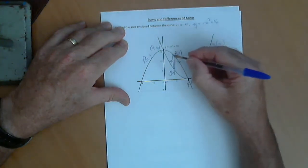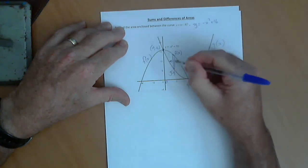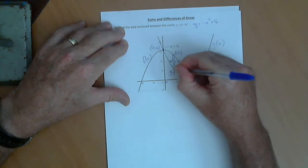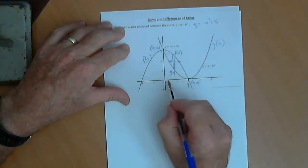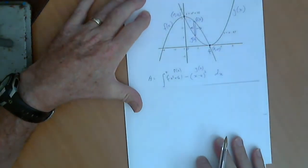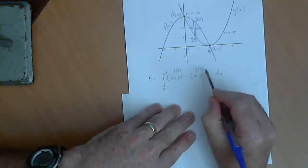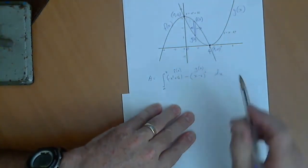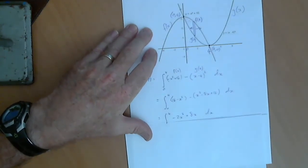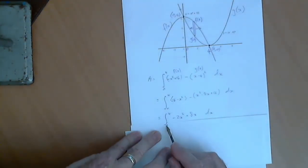So again, we're going to work out the length of that strip there, which is our f of x minus our g of x, or the top function minus the bottom function. And then we'll integrate that between 0 and 4. So the area will just be the integral from 0 to 4 of f of x minus g of x. Simplify the algebra, and it comes out to be the integral of 0 to 4 of minus 2x squared plus 8x.